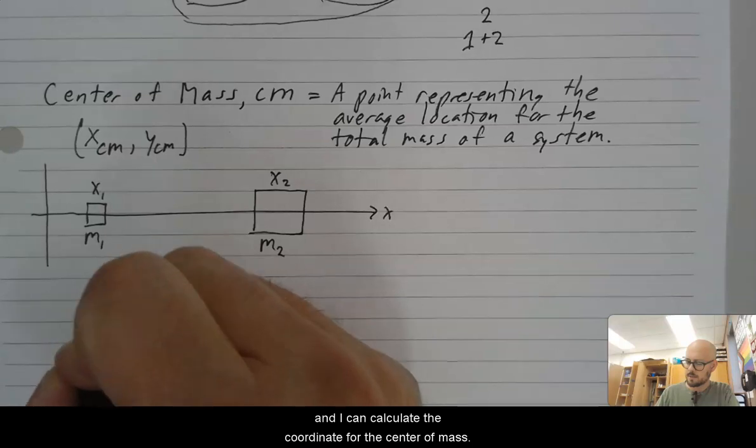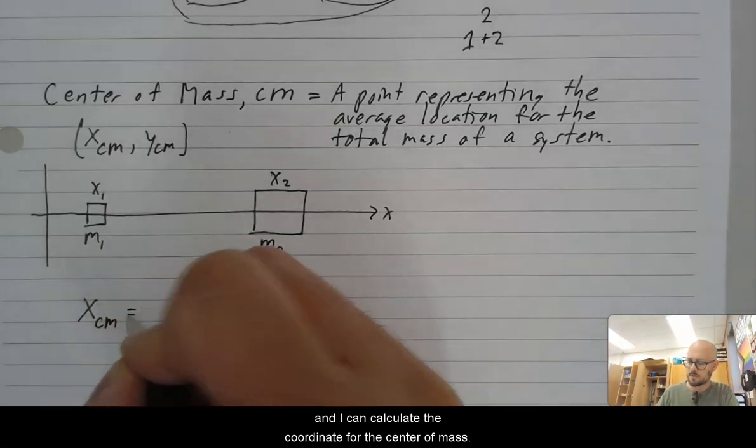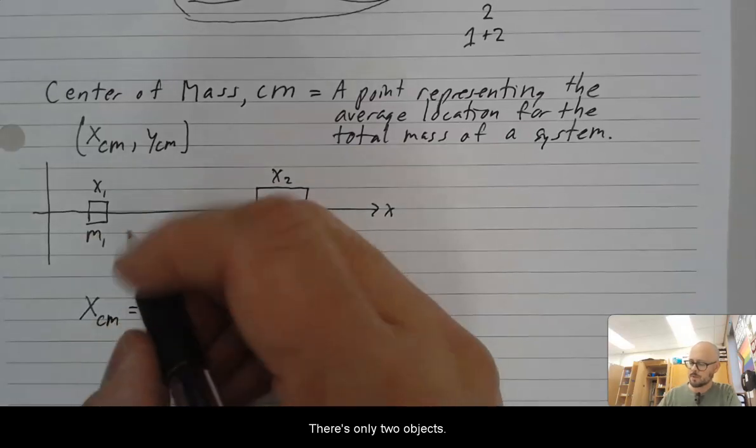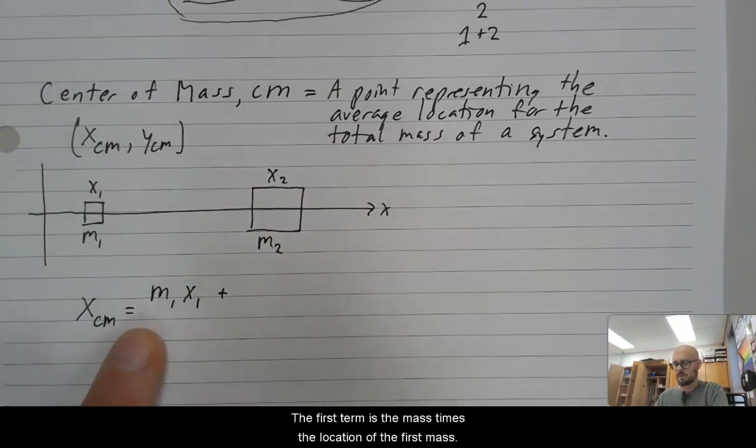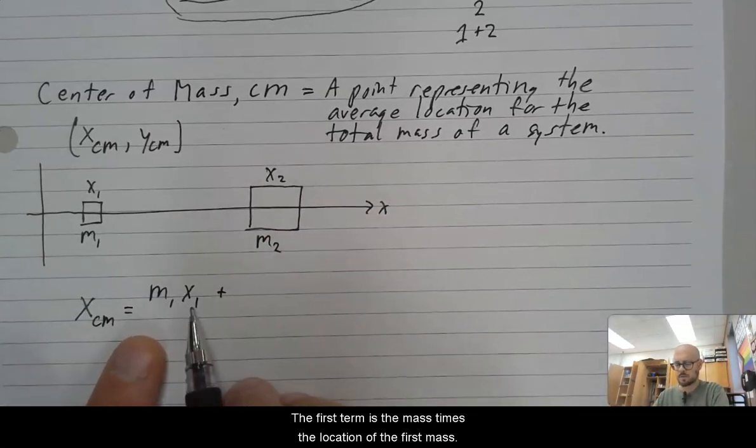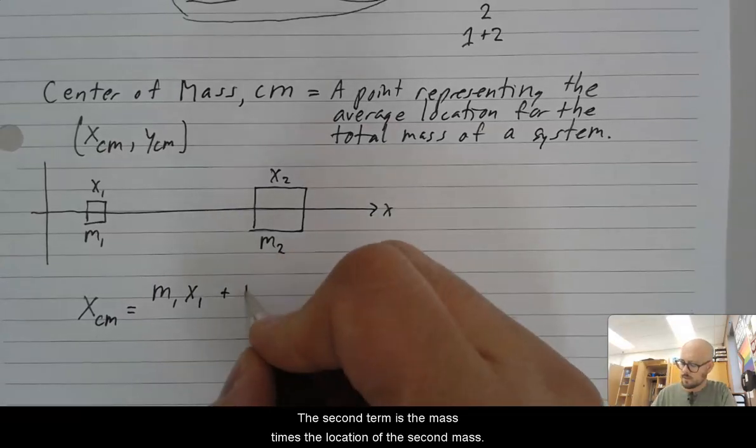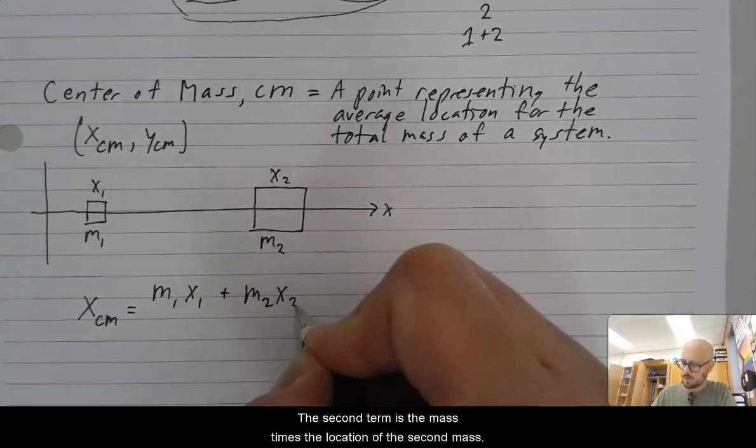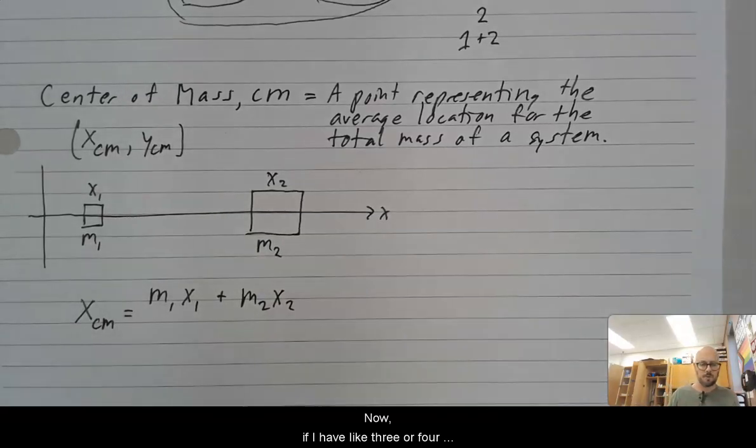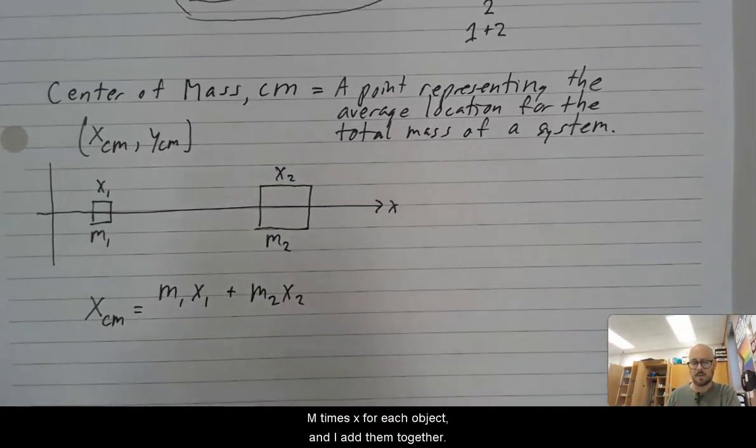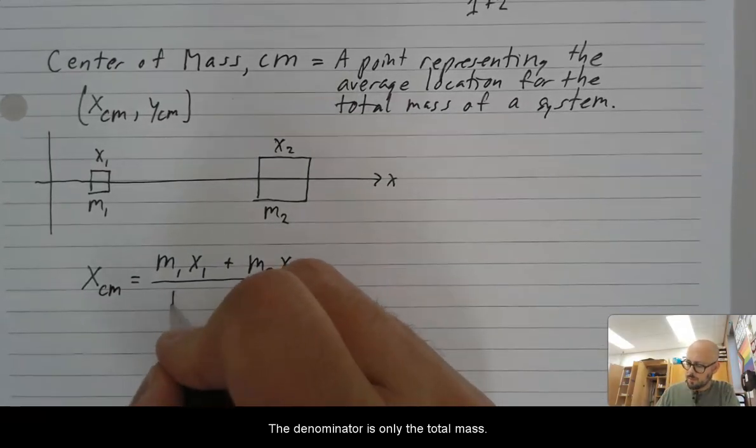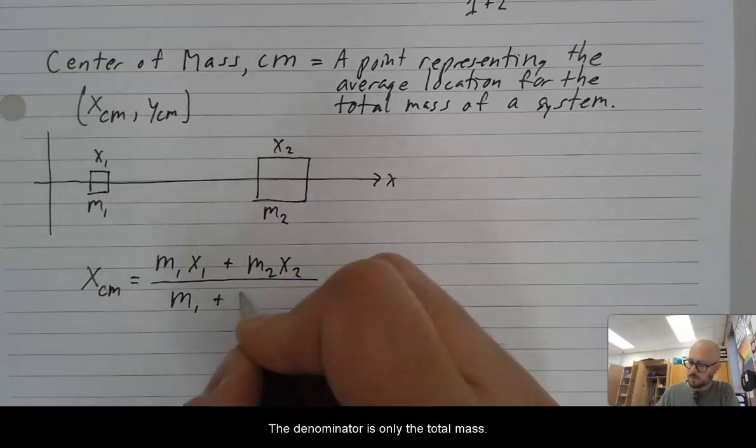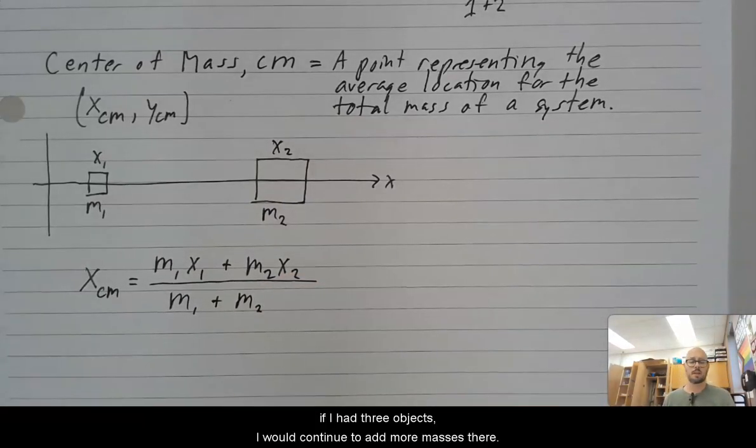And I can calculate the coordinates for the center of mass. There's only two objects, so my equation would look like that. The first term is the mass times the location of the first mass. The second term is the mass times the location of the second mass. Now if I have like three or four masses, I just have to keep going. m times x for each object, and I add them together. The denominator is only the total mass. So m1 plus m2. And again, if I had three objects, I would continue to add more masses there.